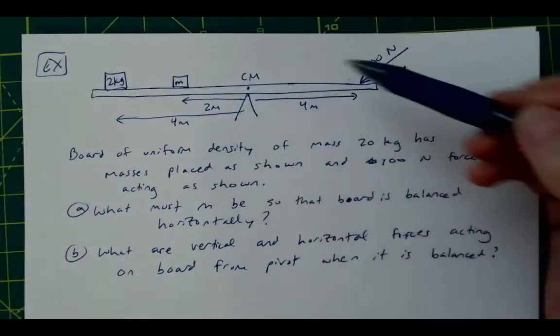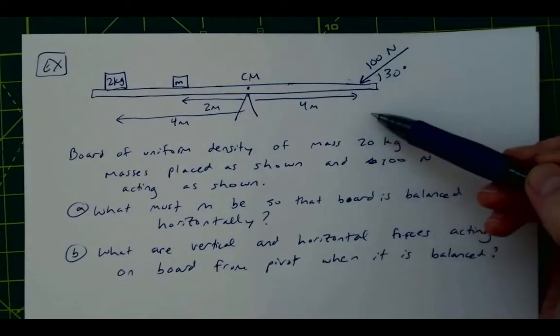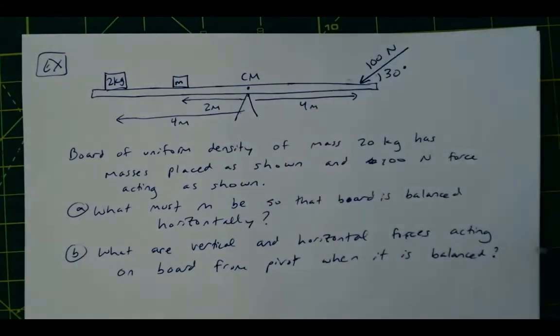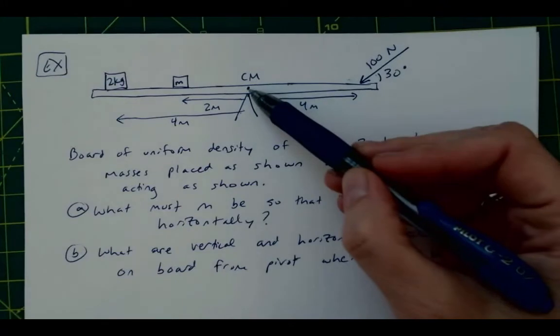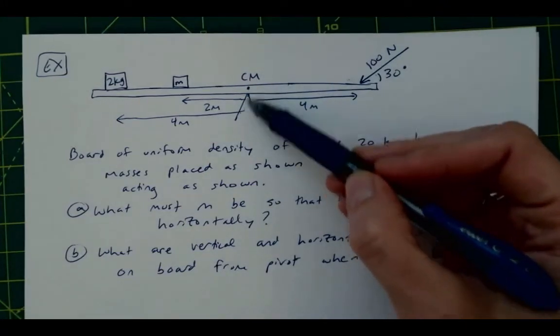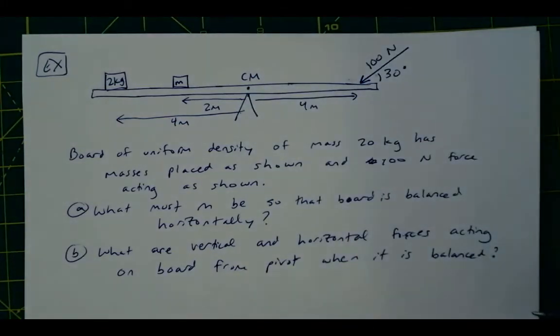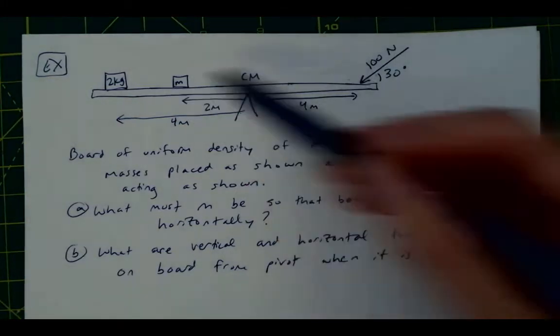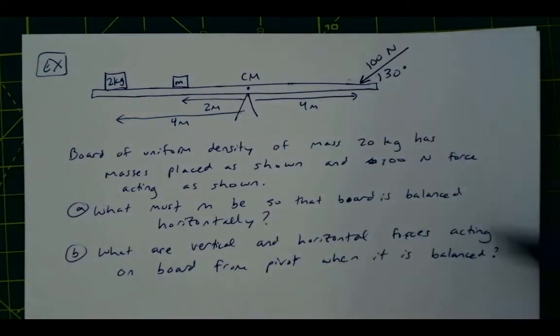will cause a counter-clockwise rotation, these will cause a clockwise rotation, and so those torques need to be balanced. The torque from this beam itself is going to be zero because it has no lever arm, it's acting at the pivot location. So we can use the sum of torques in order to figure out part A.